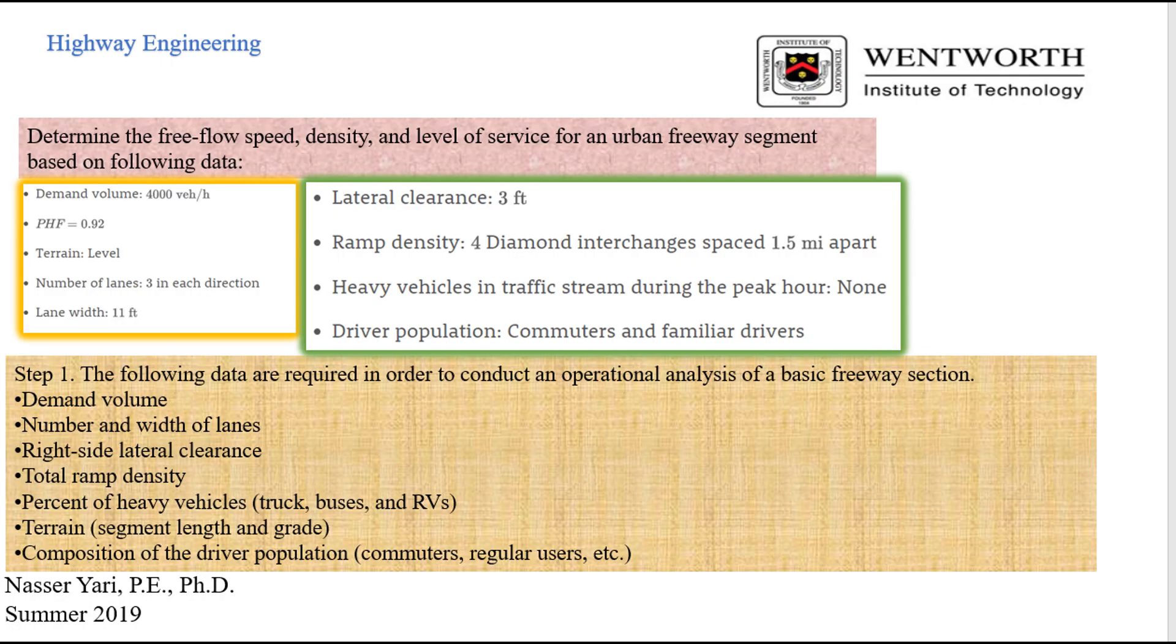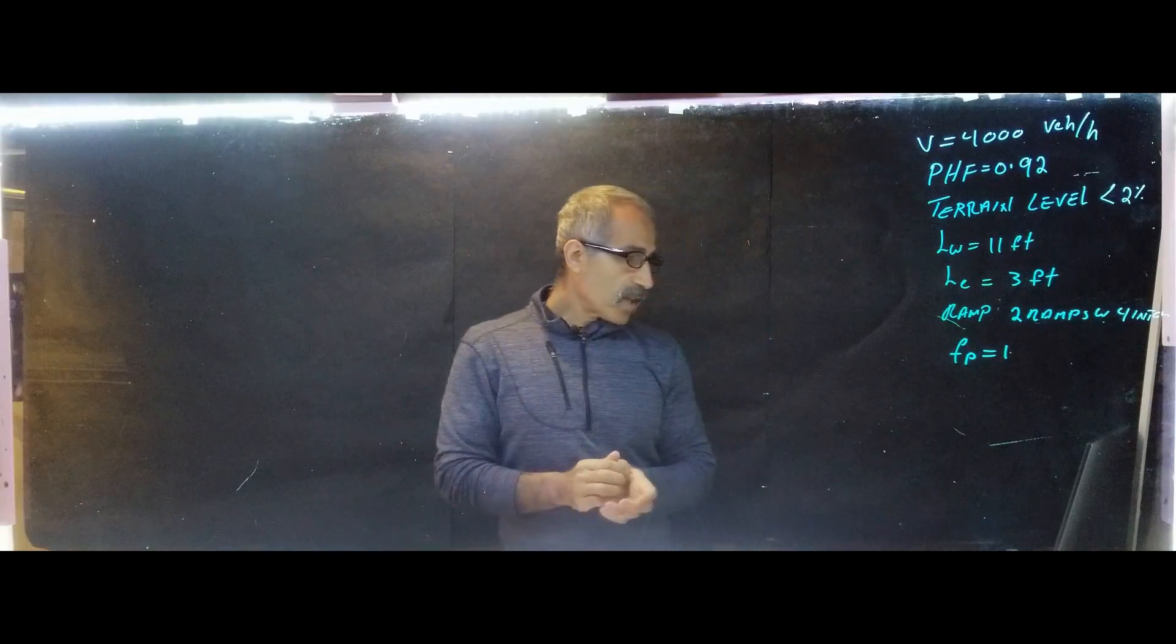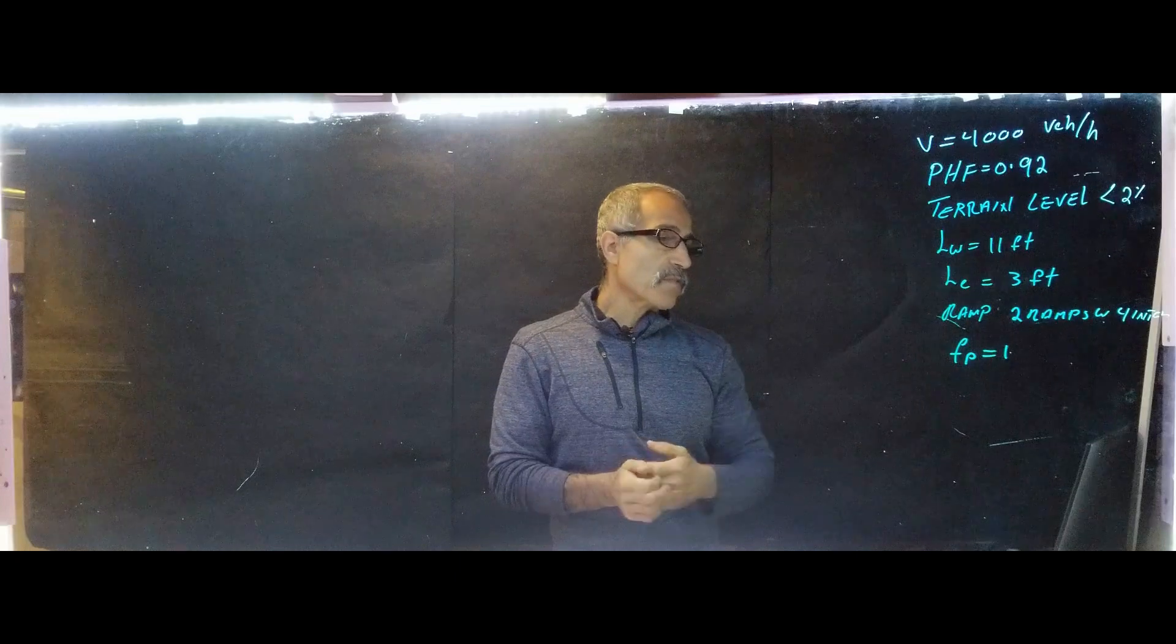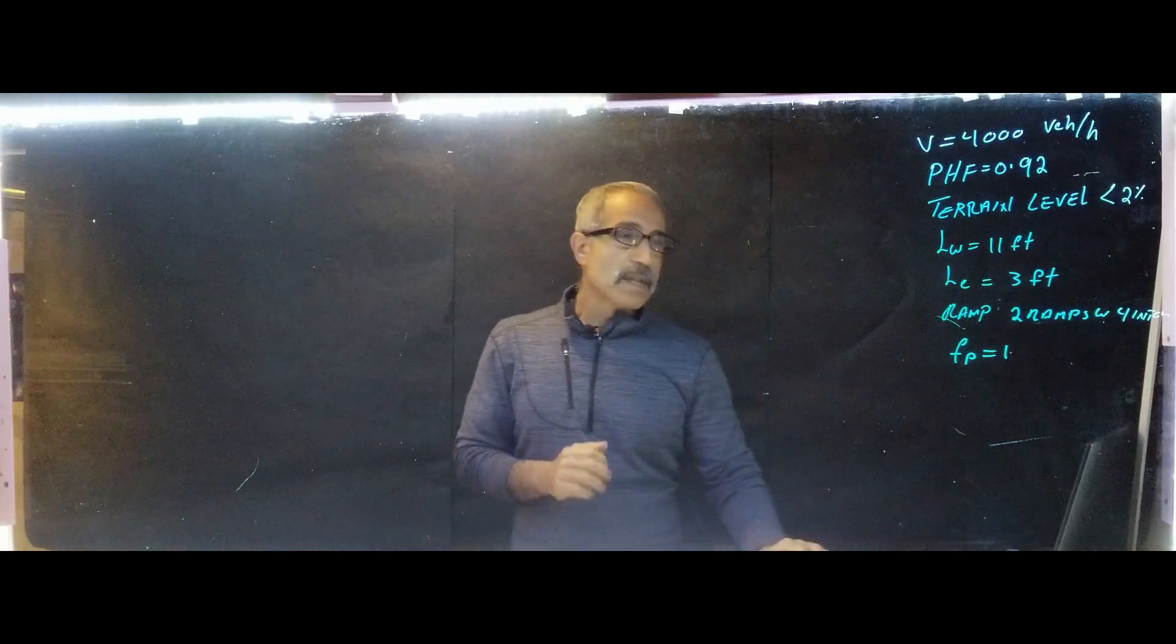Okay. So let's go ahead and do this problem right here. Problems on the board and also got it right here. The V is 4,000. And that's given a PH. This is our step one, basically. PHF is 0.92. And the profile is less than 2%. And lane width is 11 feet. And right shoulder is about three feet. And ramp, it says there are two diamond, four diamond interchange and two different ramps, one and a half mile apart. And then the driver population is basically on commuter. So our FP comes out to become one. So this is step one.